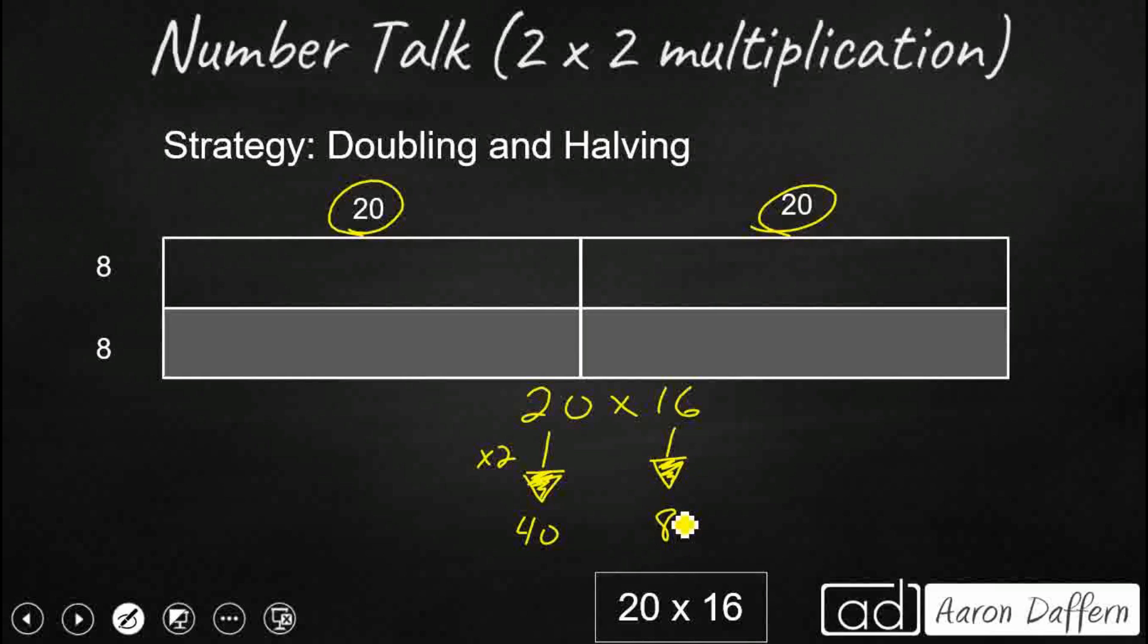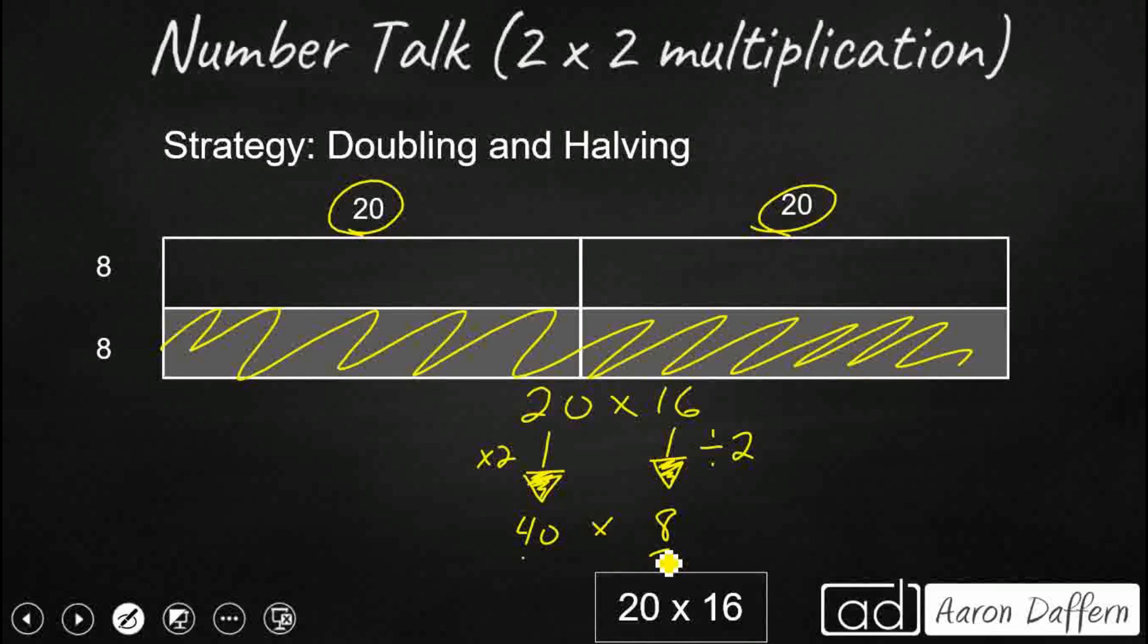Which means if I take my 20 and double it up to 40, I've got to take my 16, cut that in half in order to maintain a balanced expression. So that's why this 8 is grayed out at the bottom. So 4 times 8 is going to get me 32. Add that zero, and I've got 320.